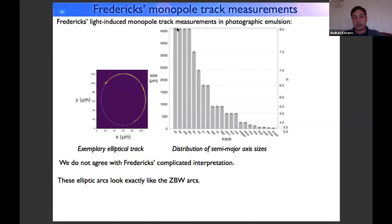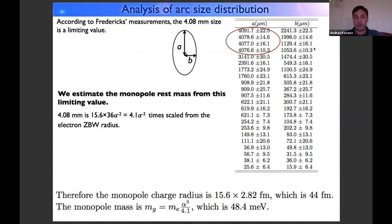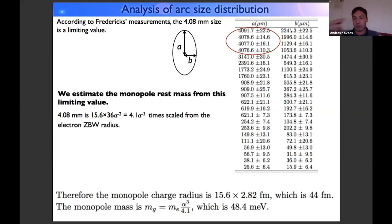The highest measured value in Fredericks' data is about 4000 microns — 4 millimeters. Looking at his data table, the large semi-axis a and small semi-axis b of the ellipses are recorded. The value 4.08 millimeters appears four times but never higher, so I assume this is a limiting value. Different b-axis values reflect different angles of the zitterbewegung.